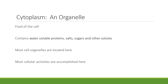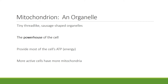Most cell organelles are located in the cytoplasm and most cellular activities occur in the cytoplasm. Another cell organelle is the mitochondrion. They are tiny, thread-like, sausage-shaped organelles and they are known as the powerhouse of the cell because they provide most of the cell's energy in the form of ATP. The more active a cell is, the more mitochondria it contains.